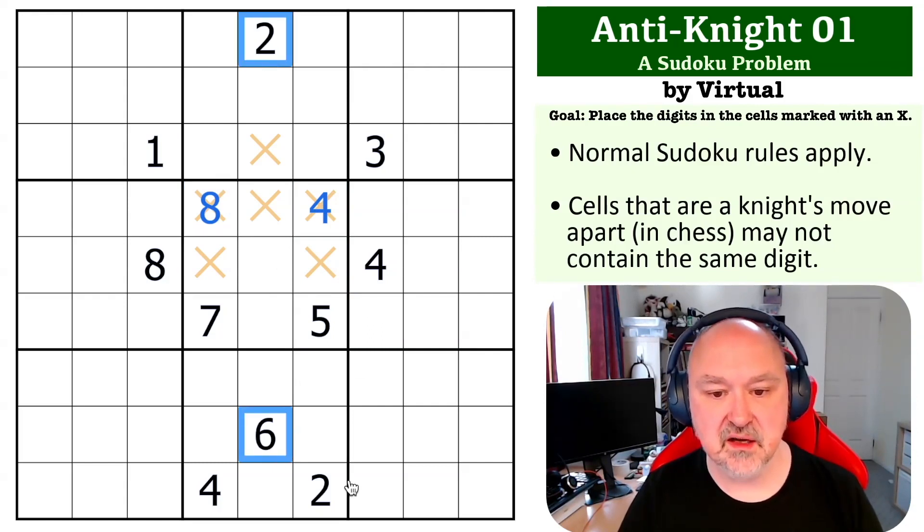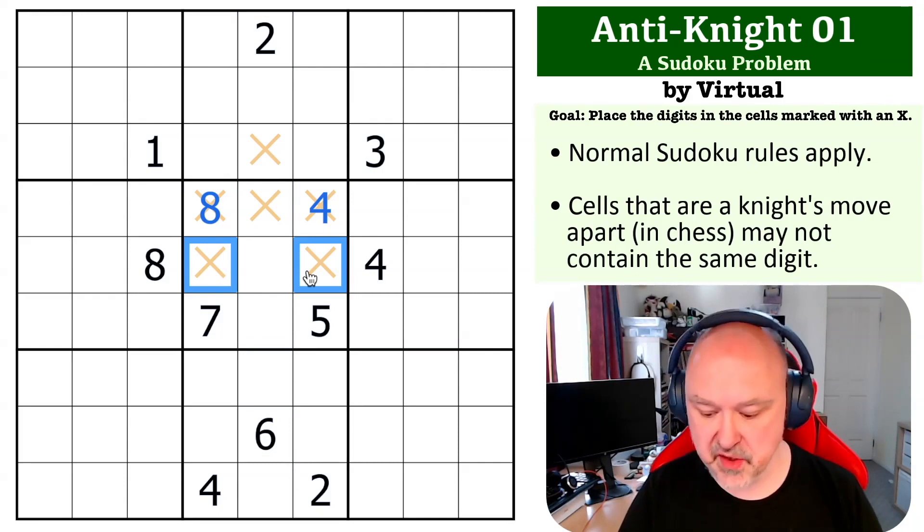Now, the two and the six here now cannot go in the central band, so they have to go in one of those two cells, and this two here resolves it. That becomes the six, and that becomes the two.